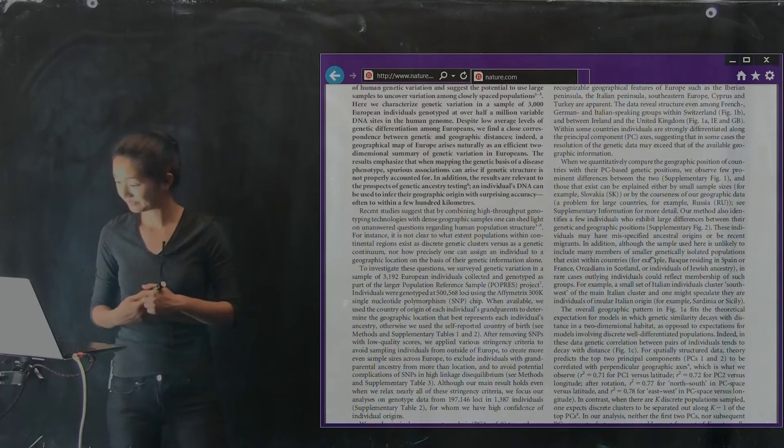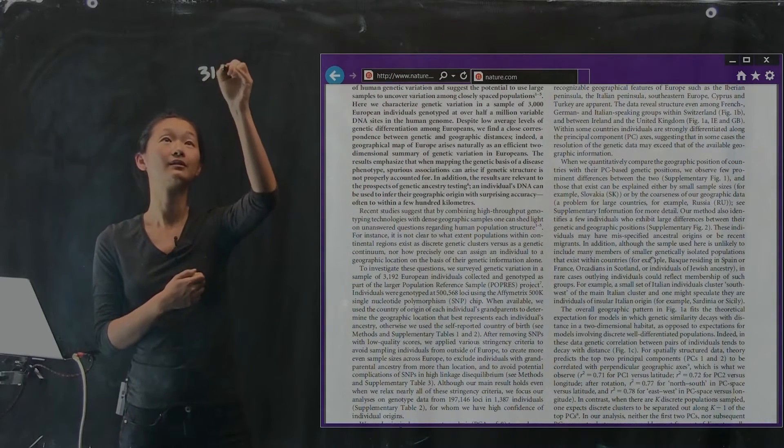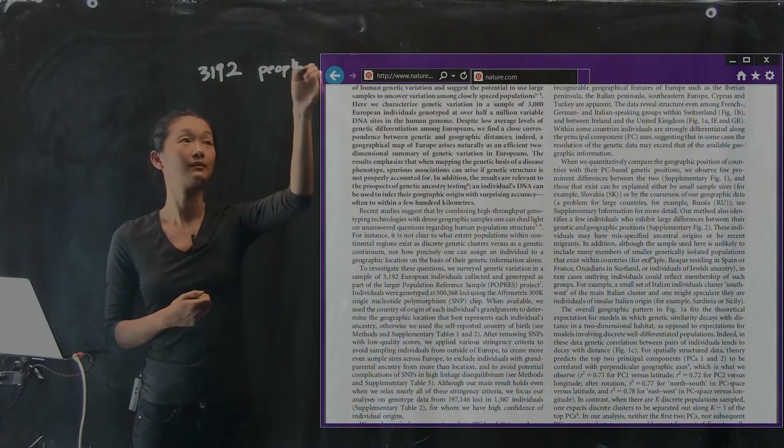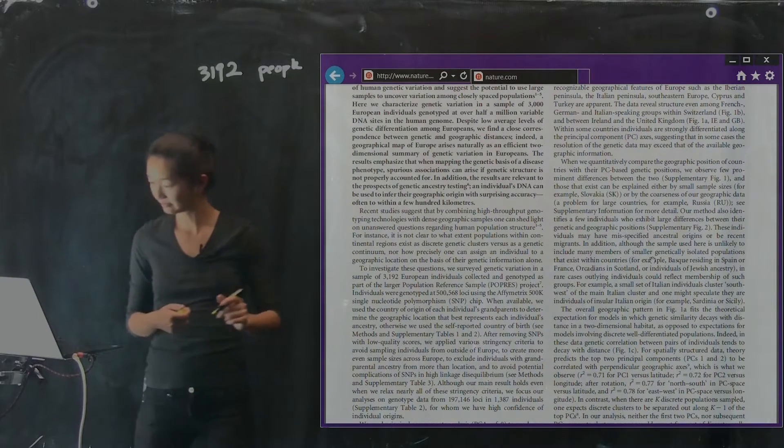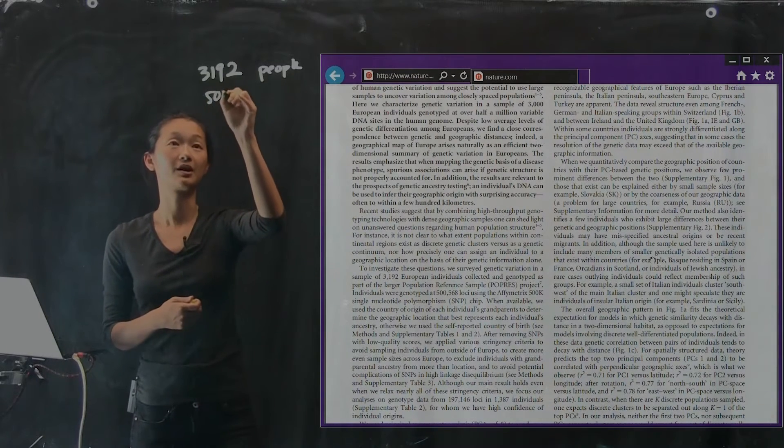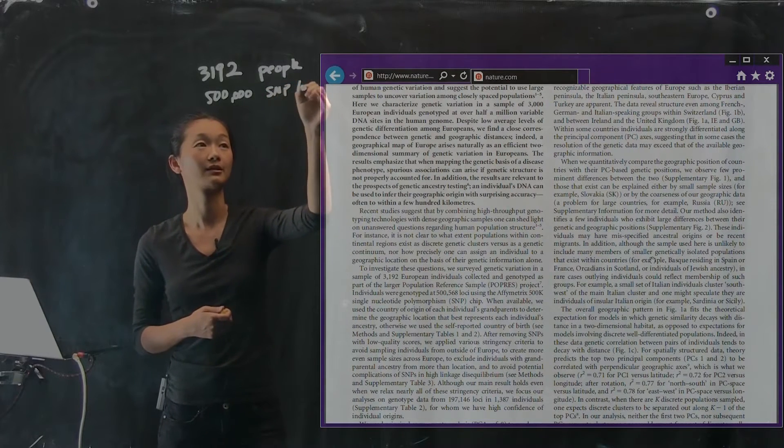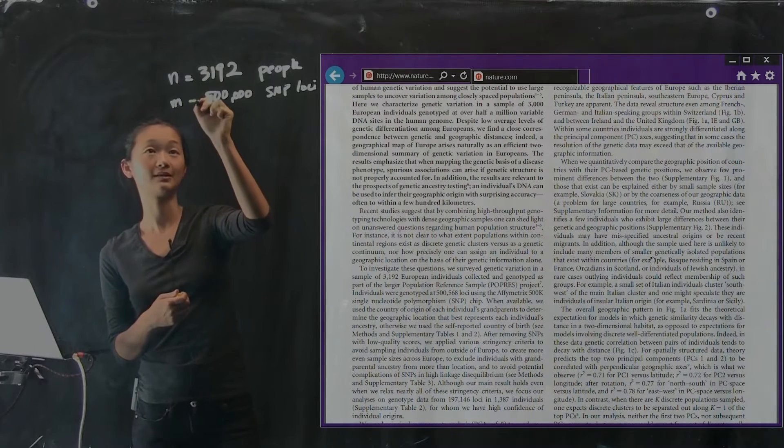They used 3192 individuals. And for each of those people they collected, I'm going to round, approximately 500,000 SNP loci. Okay? So this is N, this is M, right?